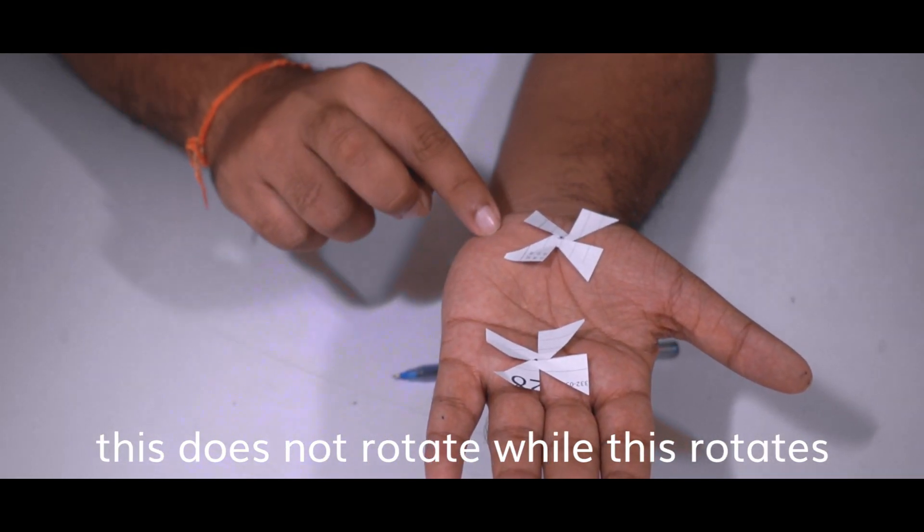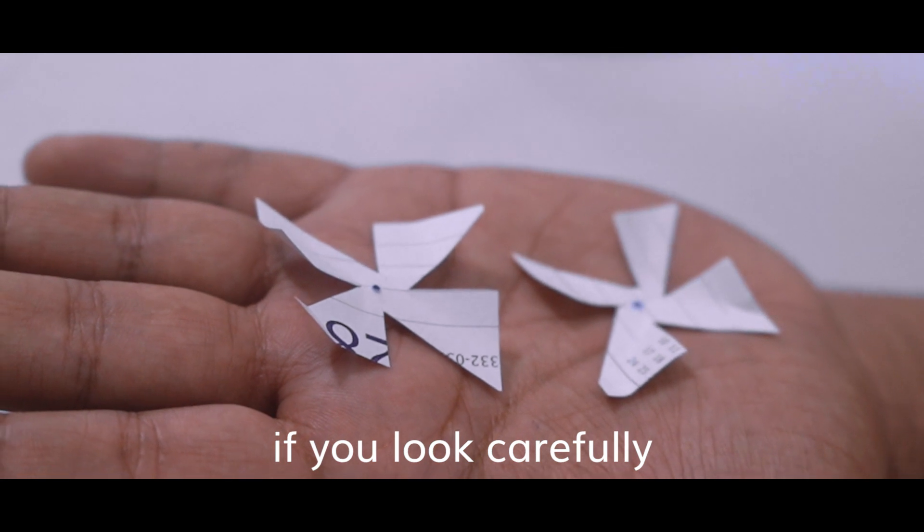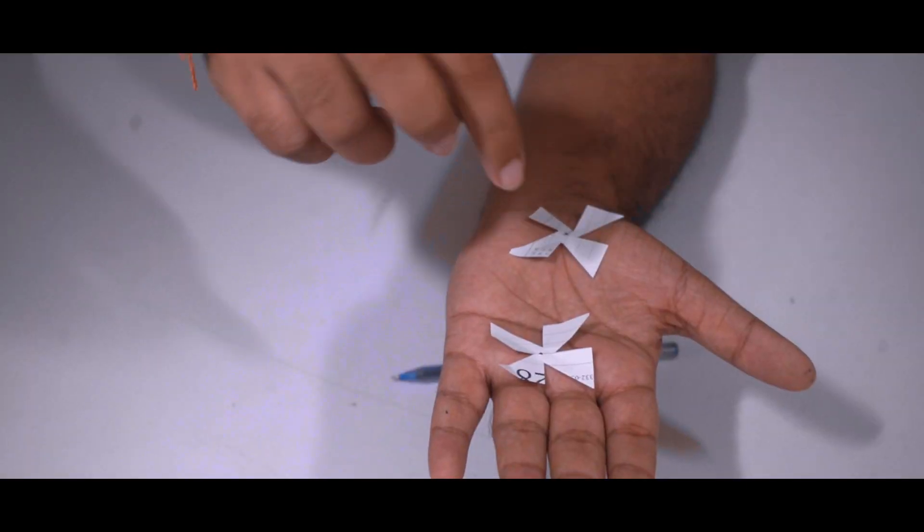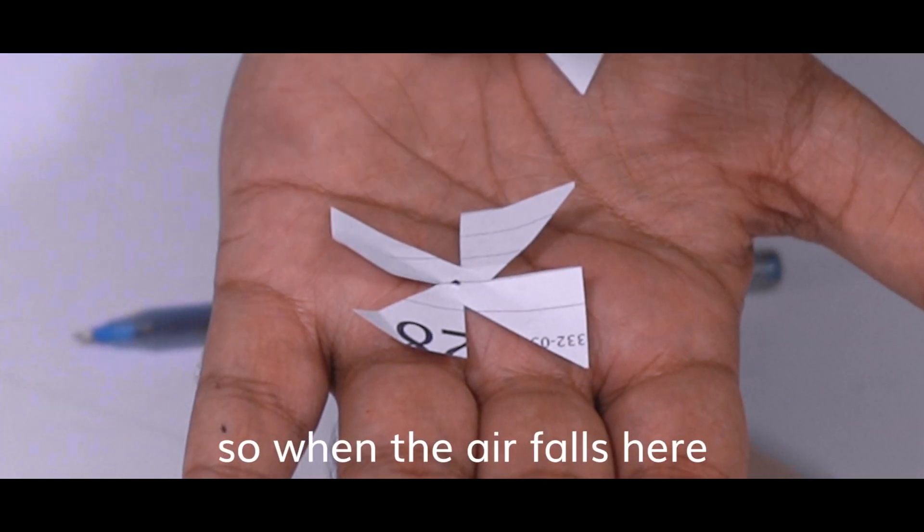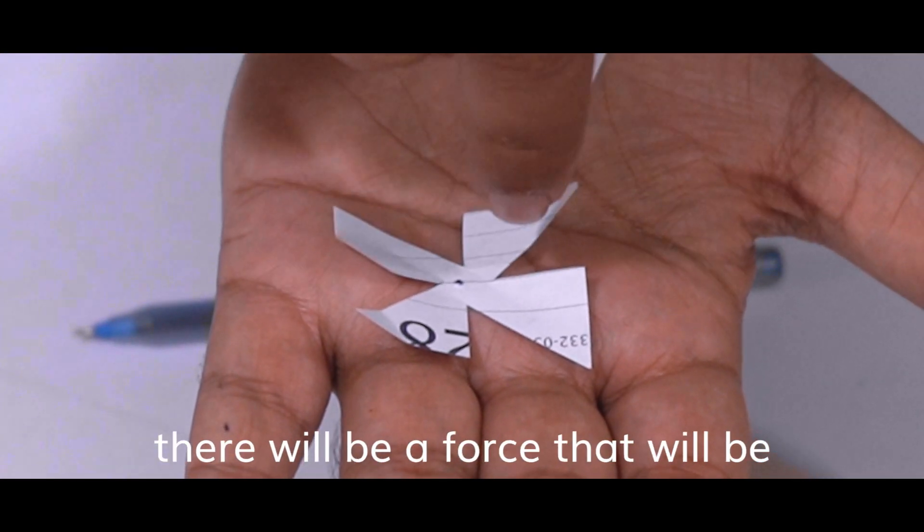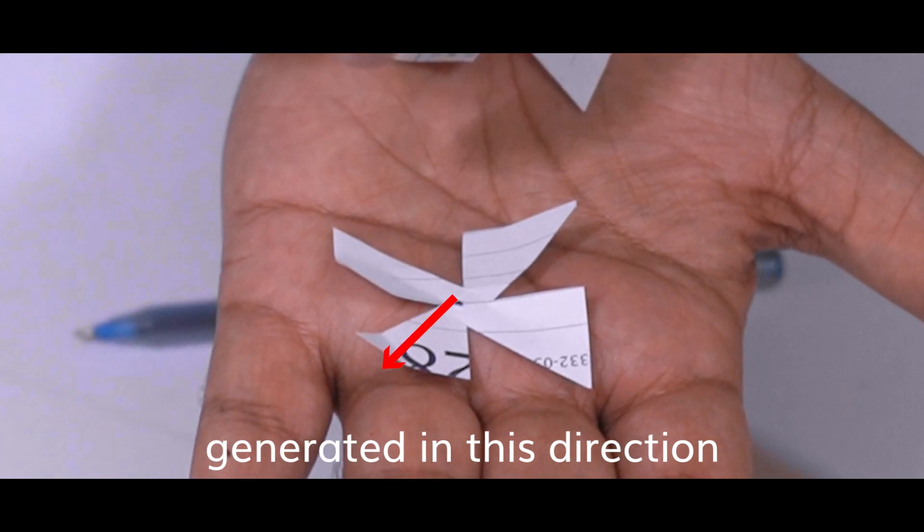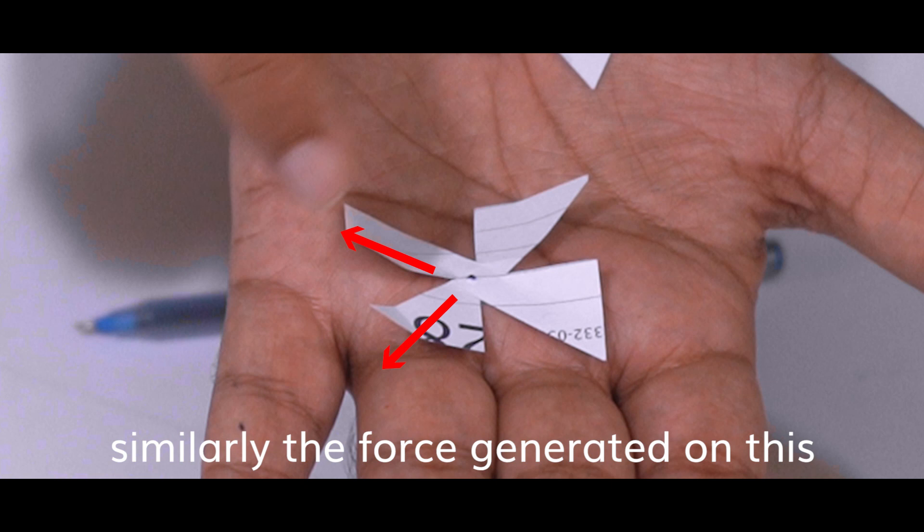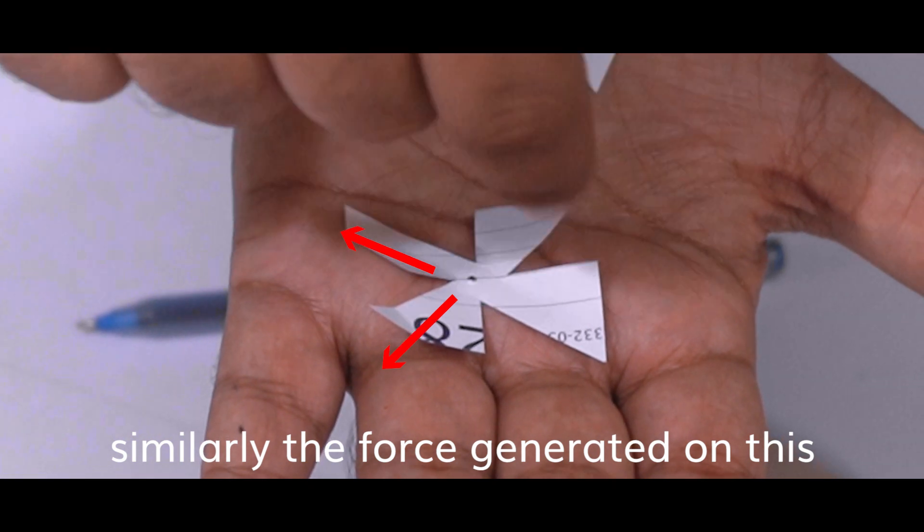Now if you look carefully, the tilting of the blades are not in the correct order. So when the air falls here, there will be a force that will be generated in this direction, while the force generated on this plate will be in the opposite direction. Similarly, the force generated on this will be in this direction.